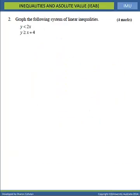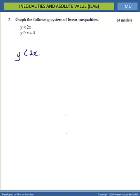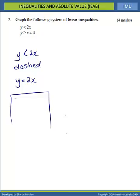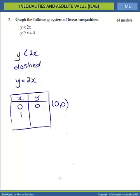Question 2: we're asked to graph the system of linear inequalities. Looking at the first inequality, y is less than 2x. We have less than, so we're going to have a dashed line, because the line y equals 2x is not included in the solution. Finding points: when x equals 0, y equals 0; when x equals 1, y equals 2; and when x equals 2, y equals 4.